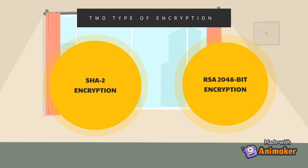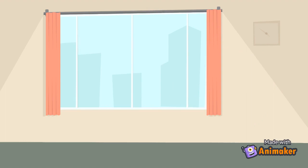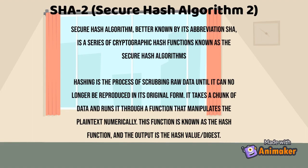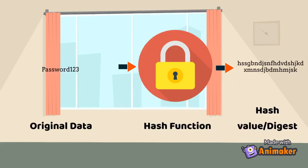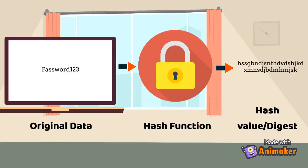SHA-2 and RSA 2048-bit encryption. Hashing is the process of scrubbing raw data until it can no longer be reproduced in its original form. It takes a chunk of data and runs it through a function that manipulates the plaintext numerically. This function is known as the hash function, and the output is the hash value or digest. The data inserted into the system will be processed by the hash function.